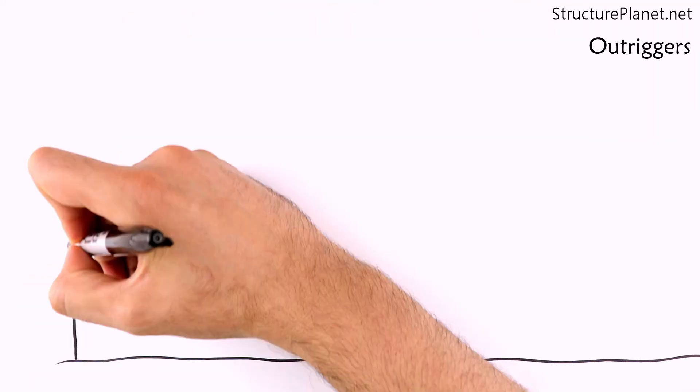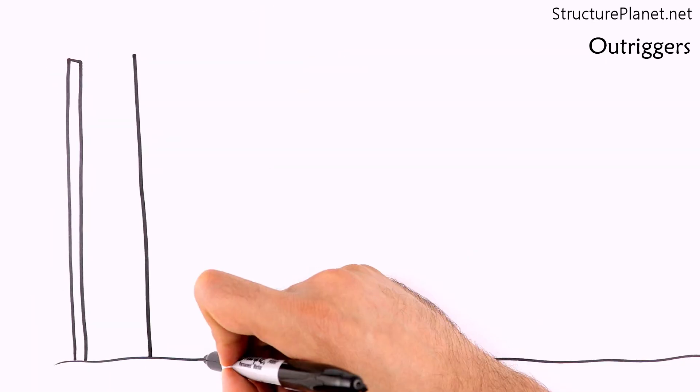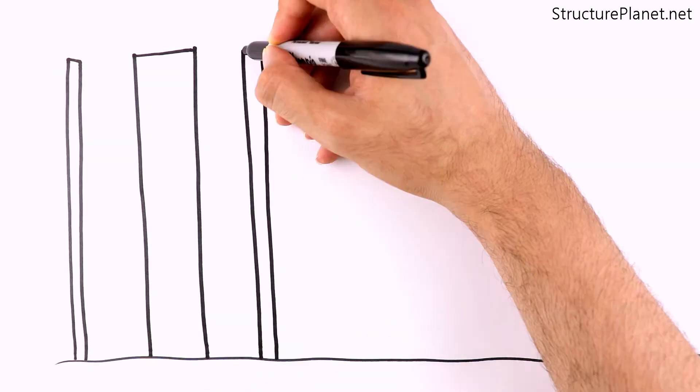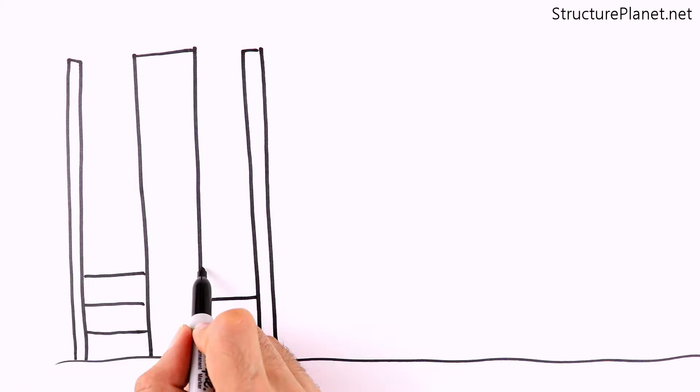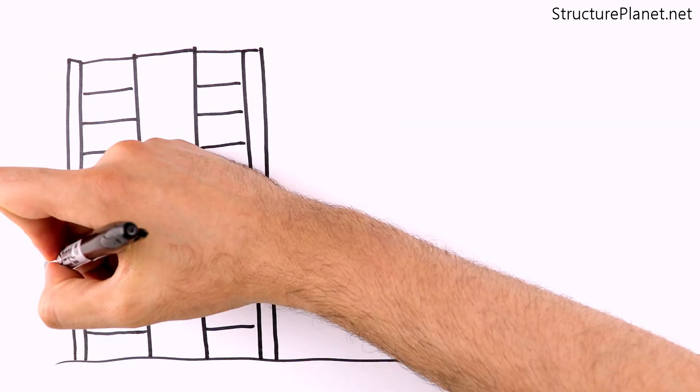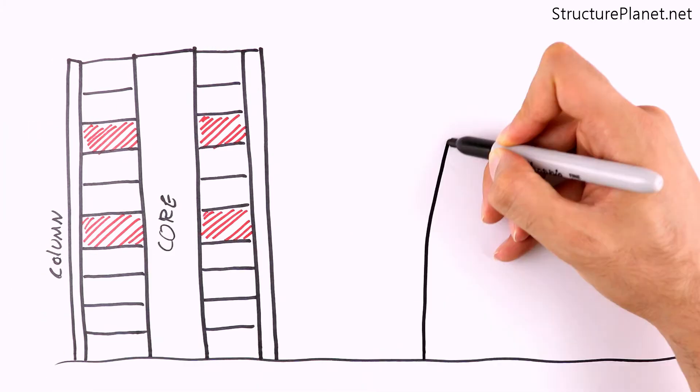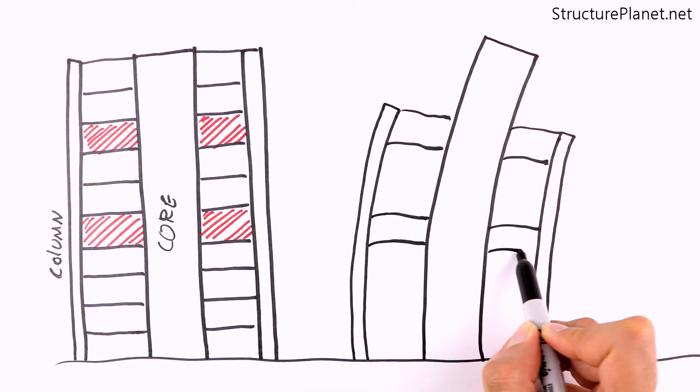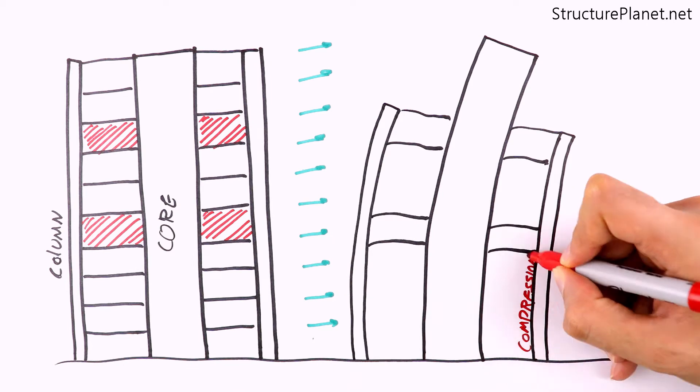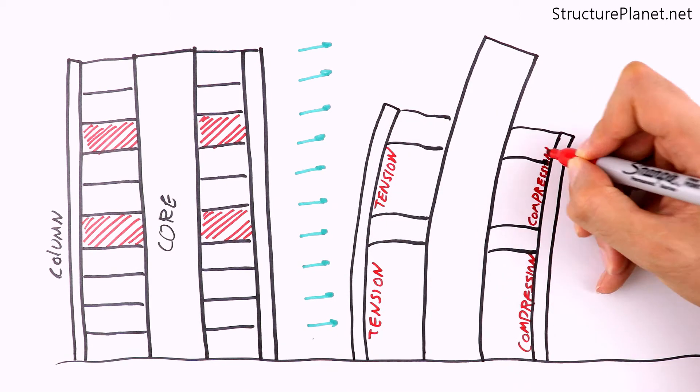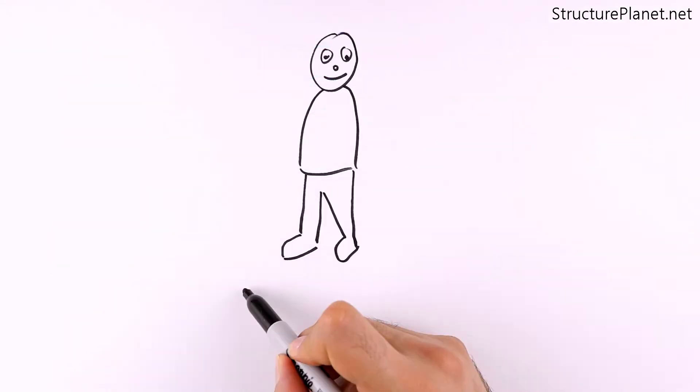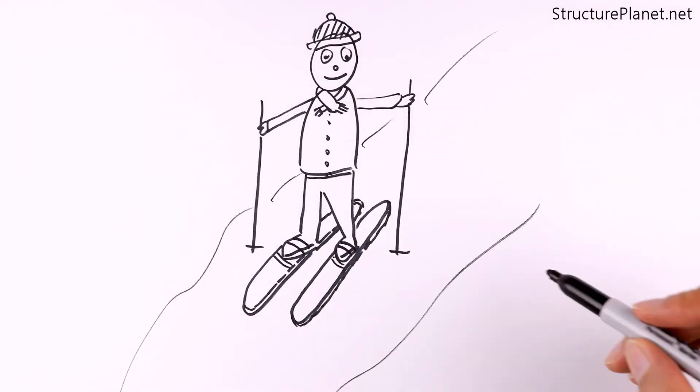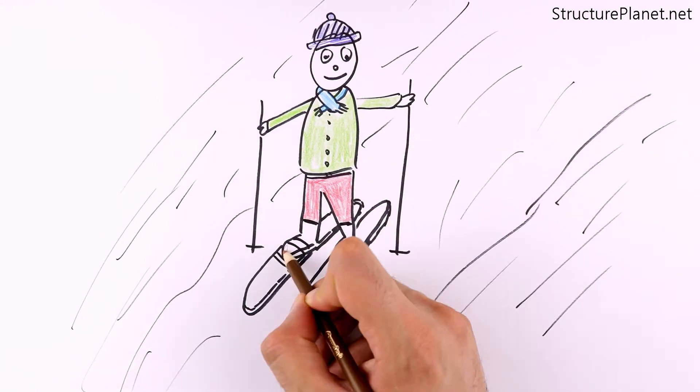Next item is the outriggers. In a non-moment framed building, columns are generally not contributing to the overall stiffness of the building. However, structural engineers change that by using outrigger systems. Connecting columns are sized to provide the required stiffness and strength, and they will act in tension or compression under the lateral loads. Outriggers work like ski sticks that extend beyond the person skiing to provide more stability.